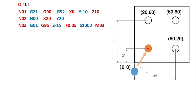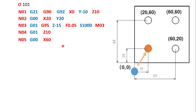The workpiece depth is 10mm, so we use Z minus 15 to ensure the tool passes completely through. After drilling, the tool must retract above the workpiece: G00 Z10 brings it 10mm above. Then we rapidly move to the next hole at X60, Y20 — only X is changed since Y remains 20. The tool is now 10mm above the second hole location, ready for the next drilling operation.